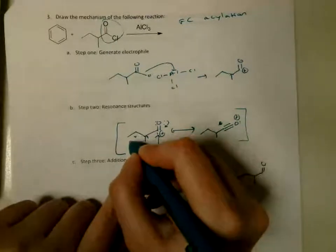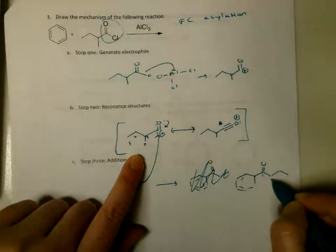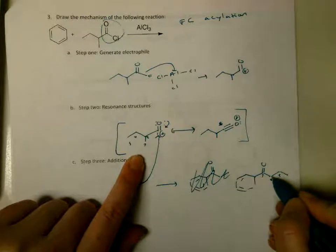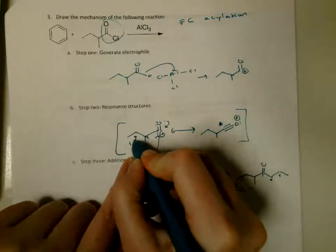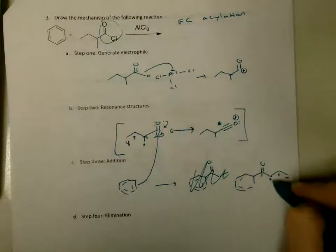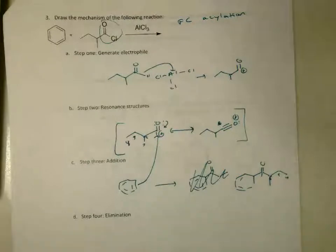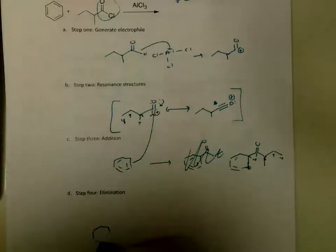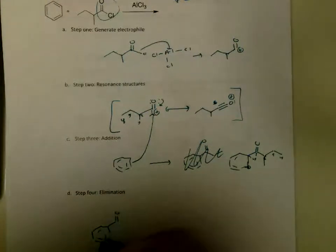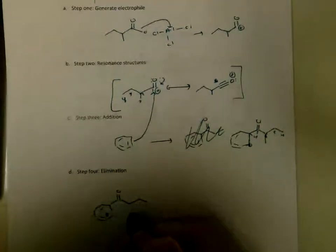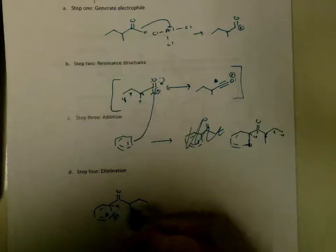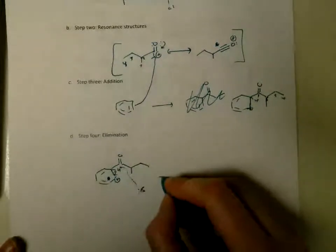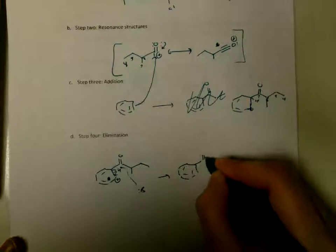Then your benzene attacks. I draw the benzene attacking the acylium structure directly because it's easier to see where the bond forms. It adds right here — counting carbons: 1, 2, 3, 4, not 5 — and on carbon 2 there's a methyl group. We still have a hydrogen and a positive charge, so the base in solution, probably AlCl4⁻, comes and takes that hydrogen to restore aromaticity. That gives you your acylation product.